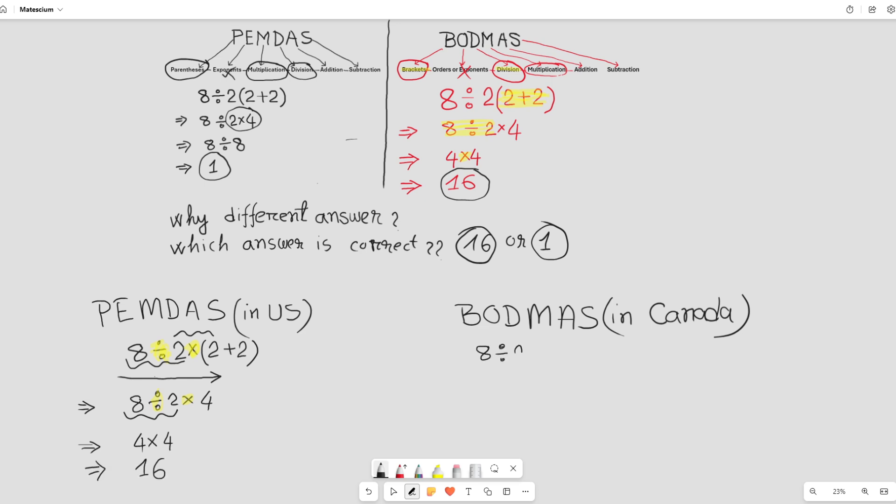According to the BODMAS or PEMDAS rules, multiplication and division should be performed from left to right. If we correctly solve this equation, they provide the same results.